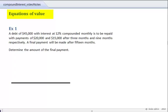A debt of $45,000 with interest at 12% compounded monthly is to be repaid with payments of $20,000 and $15,000 after 3 months and 9 months respectively. A final payment is going to be made after 15 months. Determine the amount of the final payment.